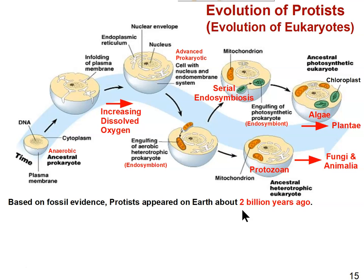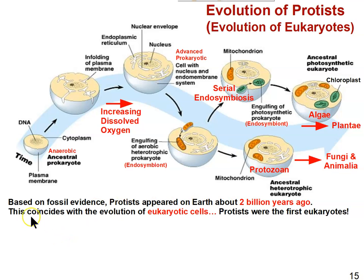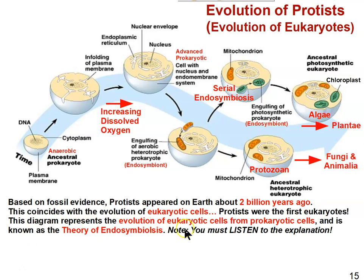You can divide Earth's history into two time periods: for 2 billion years there was nothing but prokaryotes, and then eukaryotes evolved about 2 billion years ago. That takes up 4 billion of the roughly 4.8 billion years the Earth has been in existence. This coincides with the evolution of eukaryotic cells — protists were the first eukaryotes.